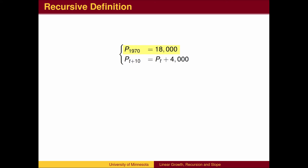we begin with a 1970 population of 18,000. Typically, the variable represents the quantity being measured. In this case, we use p for population.